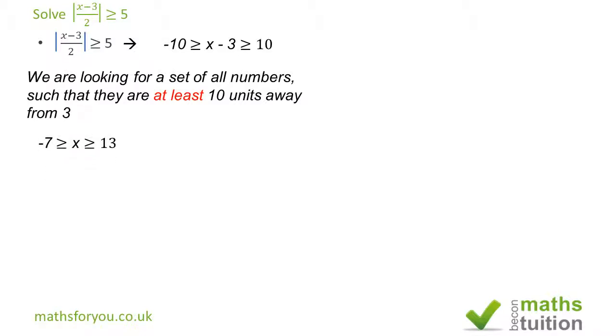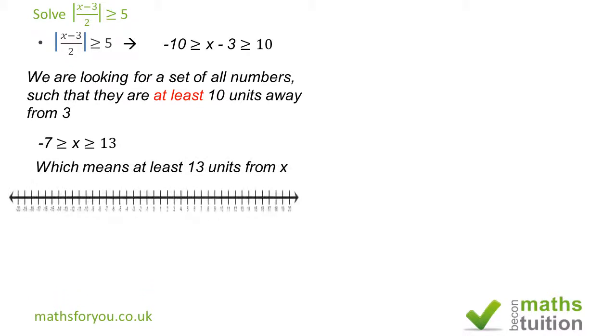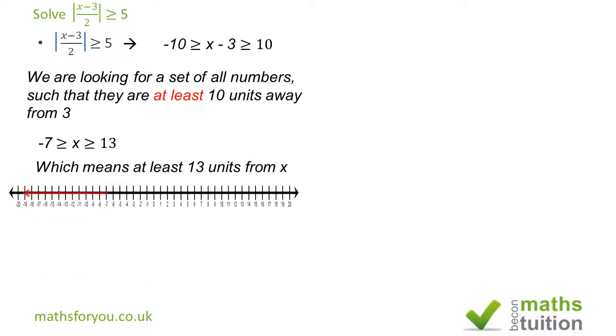Let's see what happens here. If we add 3 to both sides, we end up with x is greater than or equal to 13 and x is less than or equal to minus 7. Now, let's try this on the number line.